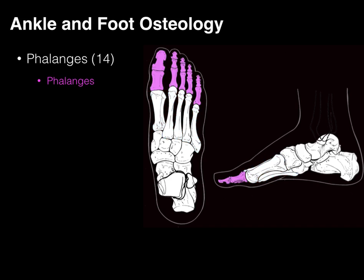We have 14 phalanges. Digit one — the first phalange — is known as your hallux, or the great toe. Digits two, three, four, and five going out laterally are the lesser toes, or lesser digits. For the great toe, there is a proximal and a distal phalange with an interphalangeal joint between. For the lesser toes, there is a proximal, middle, and distal phalange with both a proximal interphalangeal joint and a more distal interphalangeal joint.